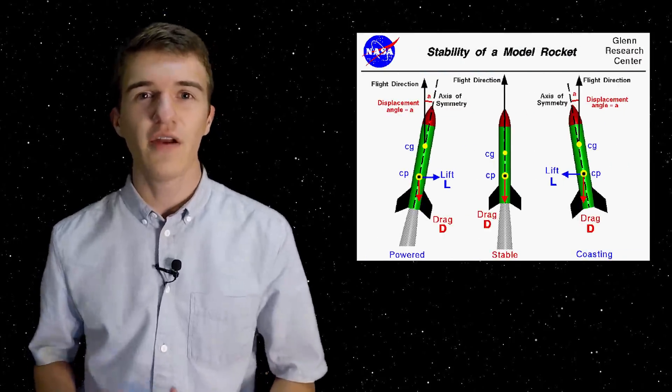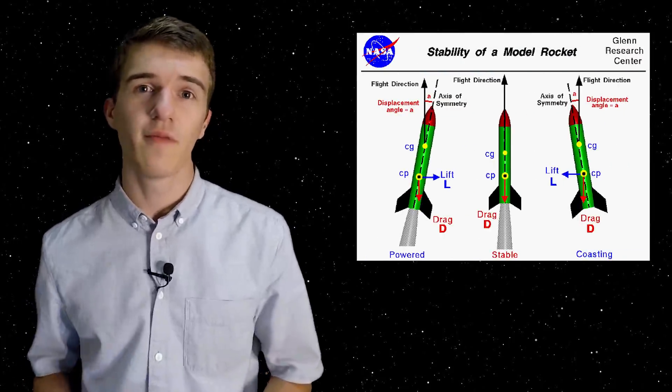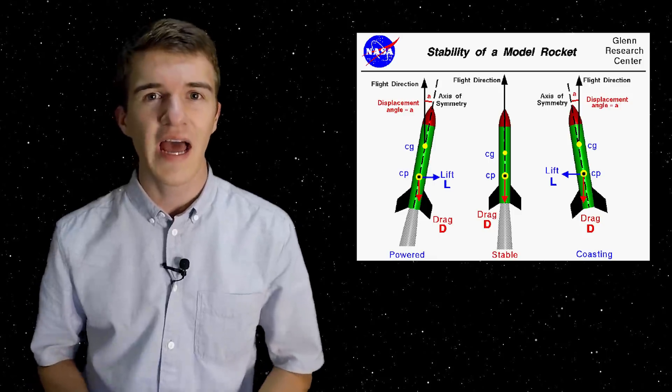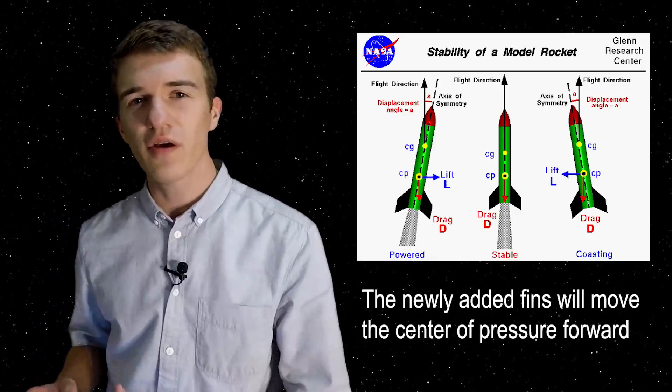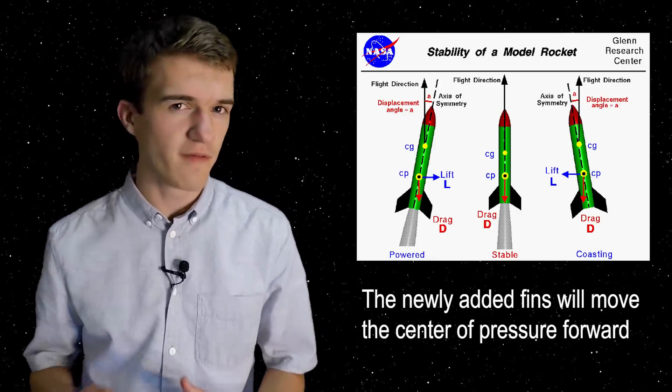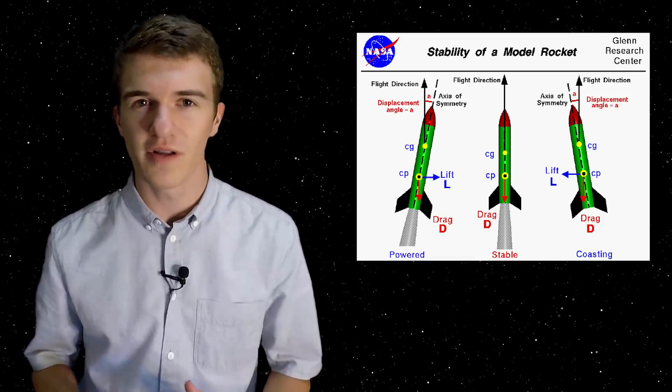My last concern for the new design is regarding the center of pressure. The Raptor engines are capable of gimballing and controlling the rocket on ascent. However, it's probably moving the center of pressure above the center of gravity, which usually makes it more unstable flying upwards. I'm interested to see what control authority they have during ascent or max-q stages, and what they'll do to minimize instability.